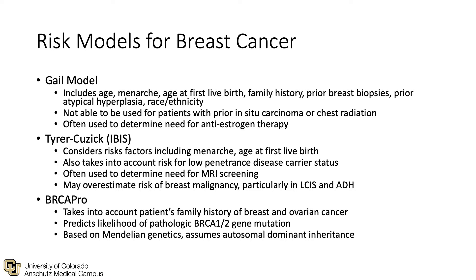The Gale model uses demographic and gynecologic features of the patient, along with prior history of breast biopsies or atypical hyperplasia. It cannot be used for patients with prior in situ carcinomas or chest radiation, but is often used to determine need for anti-estrogen therapies. The Tyrer-Cuzick model considers similar risk factors and also takes into account risk for low penetrance disease carrier status. It is often used to determine need for MRI screening, but may overestimate risk in patients with LCIS or atypical hyperplasia. The BRCA-PRO model takes into account a patient's family history of breast and ovarian cancer and predicts likelihood of pathologic BRCA1 or BRCA2 gene mutations.